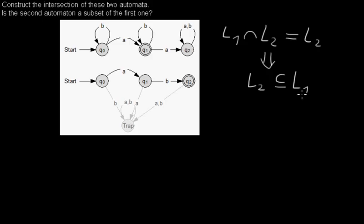And that's what we can do with the automaton. That means if we create the intersection of the two automata and the resulting automaton will be the same as one as we started with, then we know that one automaton is a subset of the other automaton.